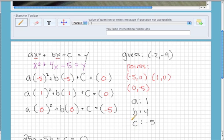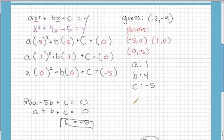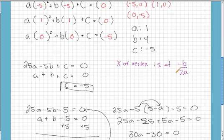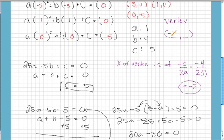The vertex of any parabola is going to have an x coordinate at negative b over 2a. Well, now that we've solved for b and a, that's really easy to figure out. So let's plug in b, and we get negative 4 over 2, and a is just 1. Well, that gives us negative 2. So our vertex has an x coordinate of negative 2.